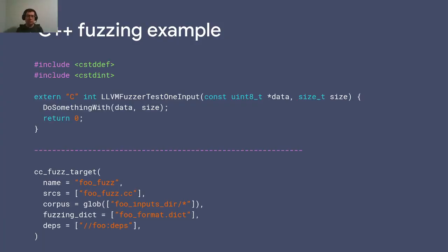Here is an example of fuzzing in TensorFlow with LLVM fuzzer. We define the function LLVMFuzzerTestOneInput, which has two arguments: a buffer called data and its size — this buffer is the random input given to the fuzzer. We call the API with this buffer and its size. TensorFlow uses Bazel for building, so we write a build file using the ccfuzz_target macro — there is nothing else we need to do.